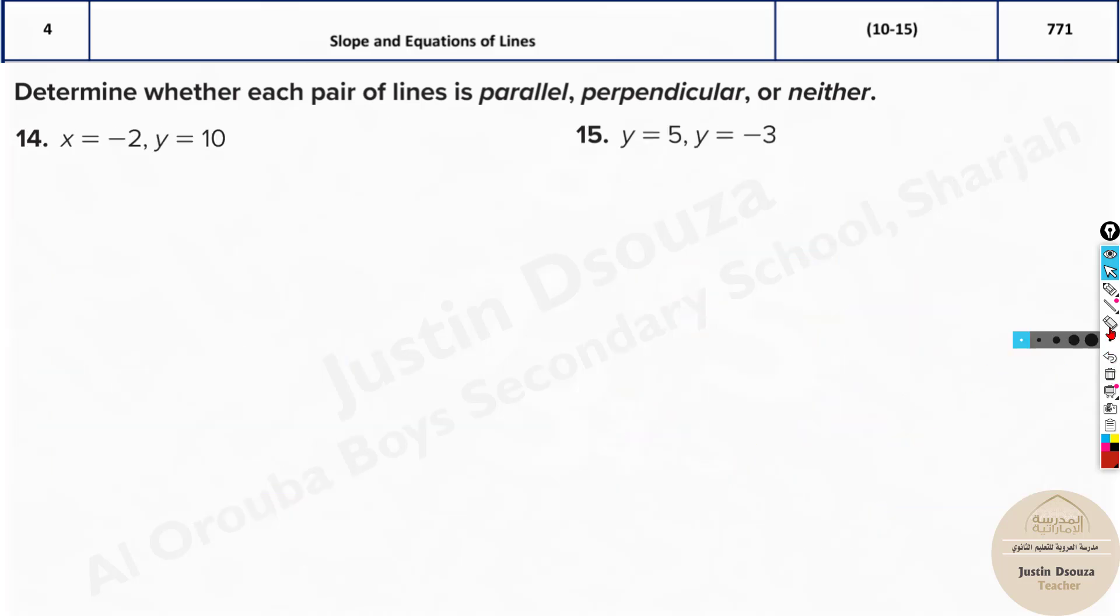Now, the last type of problem. We have x equals negative 2 and y equals 10. We only have x and y terms. We don't have a full equation. That means the lines will either be flat, horizontal, or vertical lines. So let's graph them. x equals negative 2. Where is negative 2? Over here. Draw a straight line. What about y equals 10? It's somewhere over here. Let that be 10. This is perpendicular.